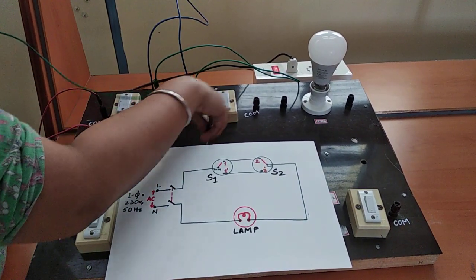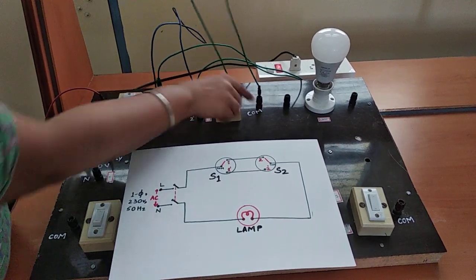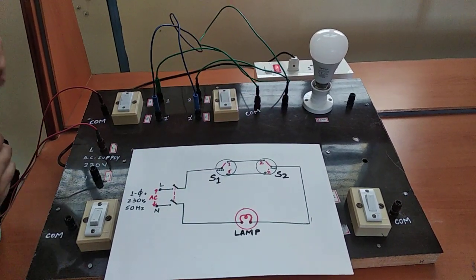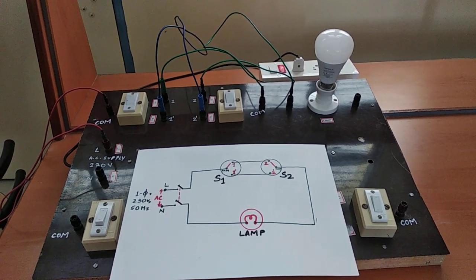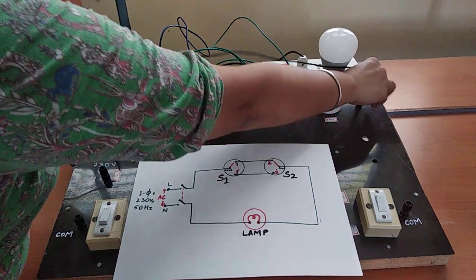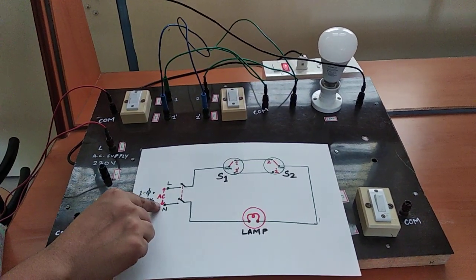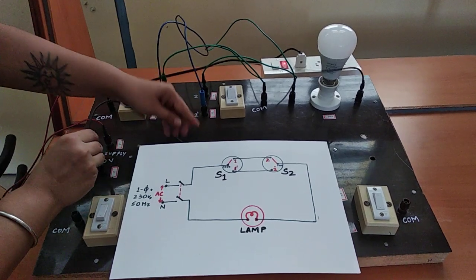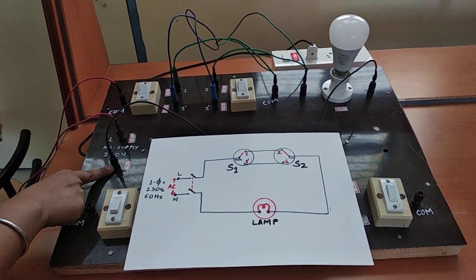From the common terminal of switch S2, it is connected to one of the leads of the lamp — the common terminal connects to one end of the lamp. From the other end of the lamp, it is connected back to the neutral terminal of the AC input.